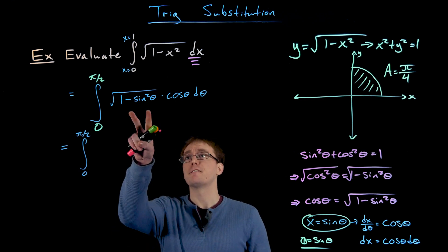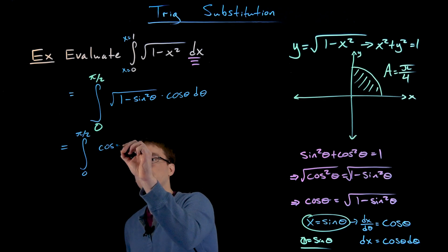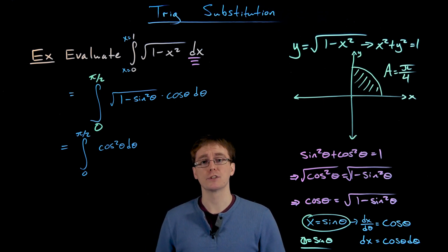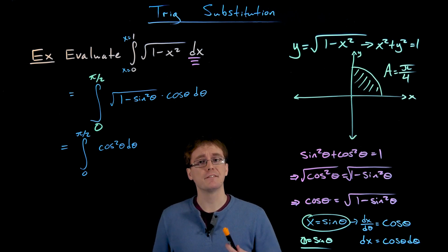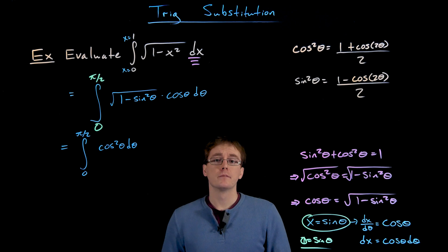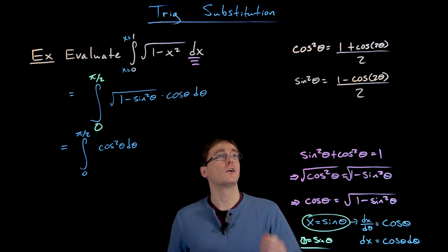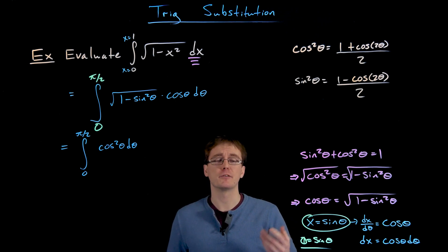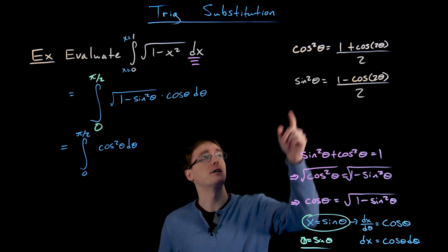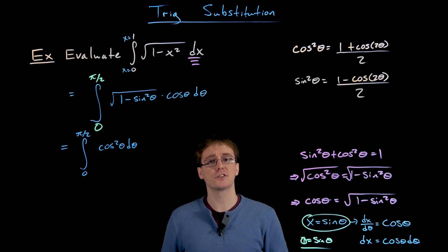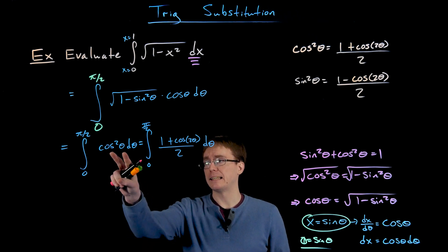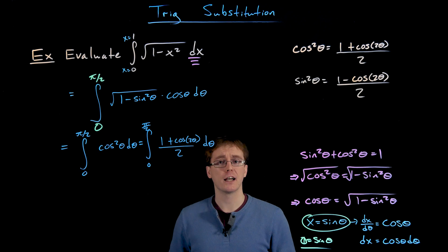Rewriting our integral, the first factor becomes a second cosine, so our integral is the definite integral from 0 to pi over 2 of cosine squared of theta dθ. For even powers of trig functions, we use the double angle or power-reducing identities. We use the fact that cosine squared of theta equals 1 plus cosine of 2 theta all divided by 2. So our integral becomes the integral from 0 to pi over 2 of (1 plus cosine 2θ)/2 dθ.